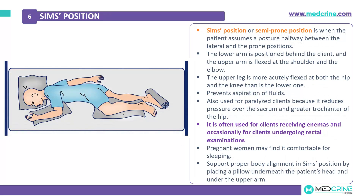Sims position is also known as the semi-prone position, where the patient assumes a posture halfway between lateral and prone position. The lower arm is positioned behind the client and the upper arm is flexed at the shoulder and elbow. The upper leg is more acutely flexed at both the hip and the knee than the lower leg. Sims position prevents aspiration of fluids and is used for paralyzed patients because it reduces pressure over the sacrum and greater trochanter of the hip. It is often used for patients receiving enemas, those undergoing rectal examinations, and most pregnant patients find it comfortable to sleep in this position.